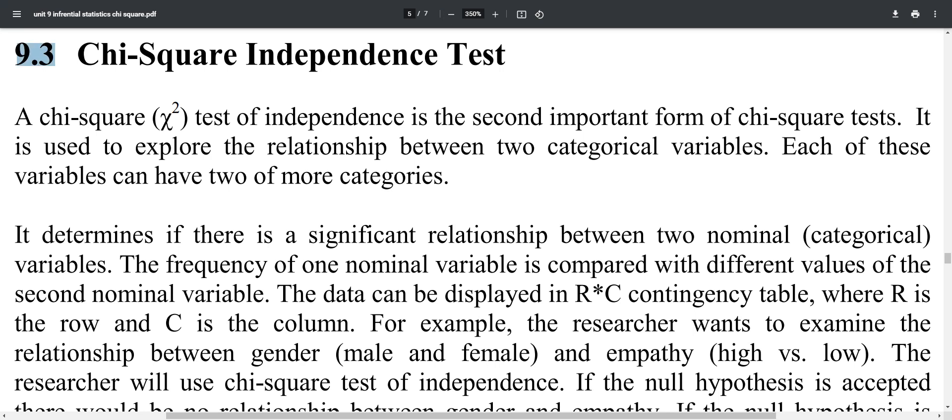Bismillahirrahmanirrahim, we have to start with 8614, Unit 9, Inferential Statistics Chi-Square Topic 9.3, Chi-Square Independence Test. This is the last topic in our course 8614.